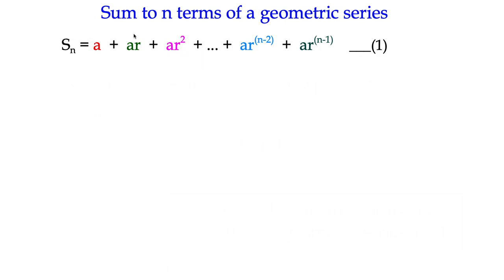The sum to n terms is all of the different terms added together. We've got a, the first term, ar, the second term, multiplied by the common ratio, multiplied by the common ratio again, ar squared, all the way up to the nth term, ar to the power n minus 1. We add them all together, that's the sum to n terms.